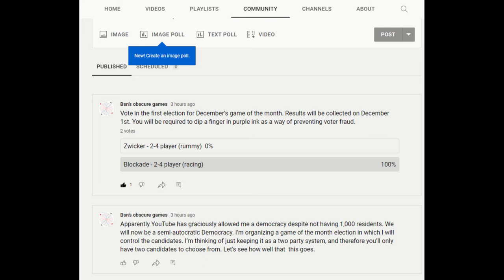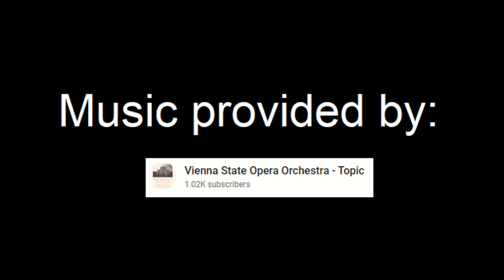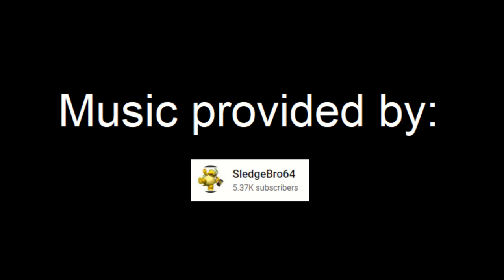Do participate in Democracy under our Community tab. We're asking for December's Game of the Month, so do vote. And I want to thank today's musicians, the Vienna State Opera Orchestra, for their excellent merry-go-round music. And, of course, Sledgebro 64, for the annoying Mario music we had at the front of this video. Do visit their channels, and I'll see you next video.